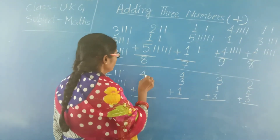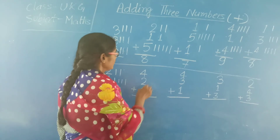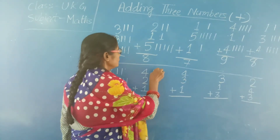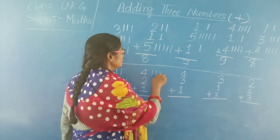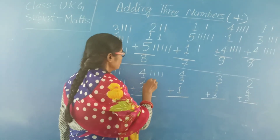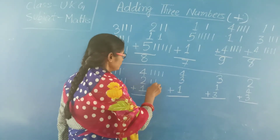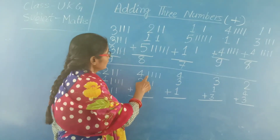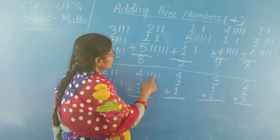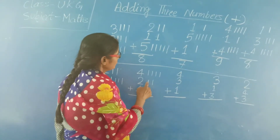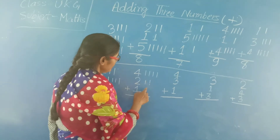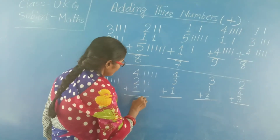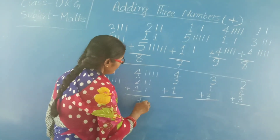Next: 4, 2, 1. Draw 4 lines: 1, 2, 3, 4. Then 2 lines: 1, 2. Then 1 line. Now count: 1, 2, 3, 4, 5, 6, 7. The answer is 7.